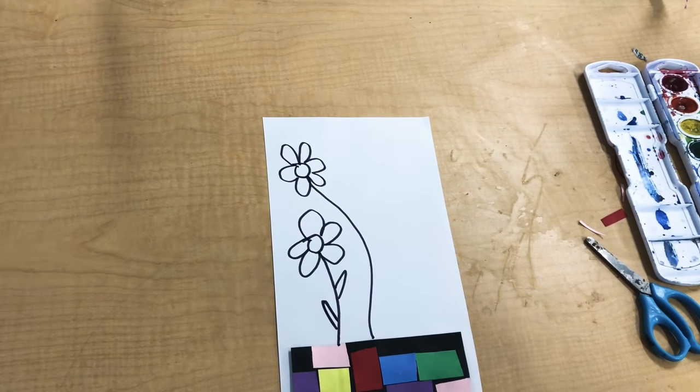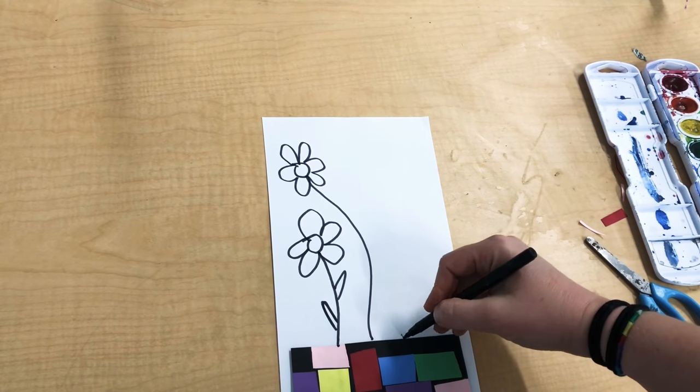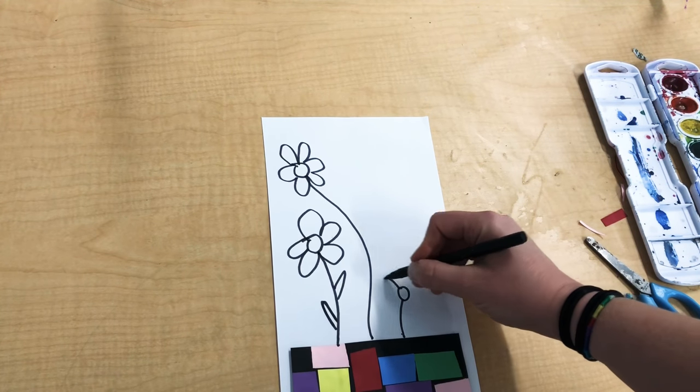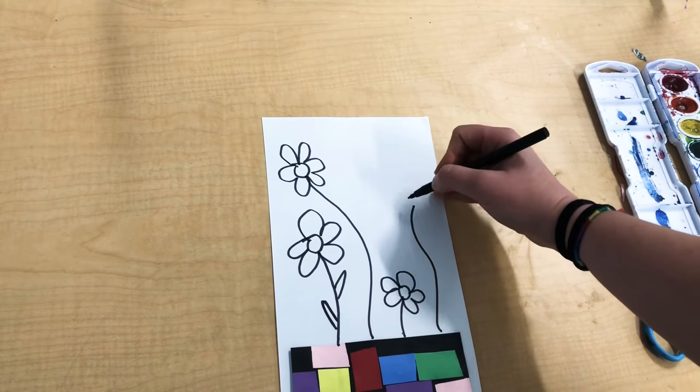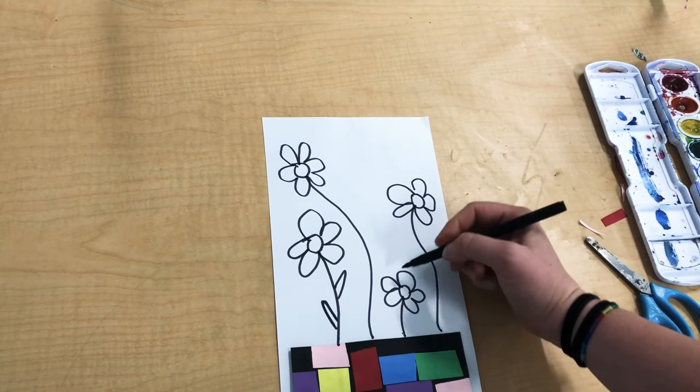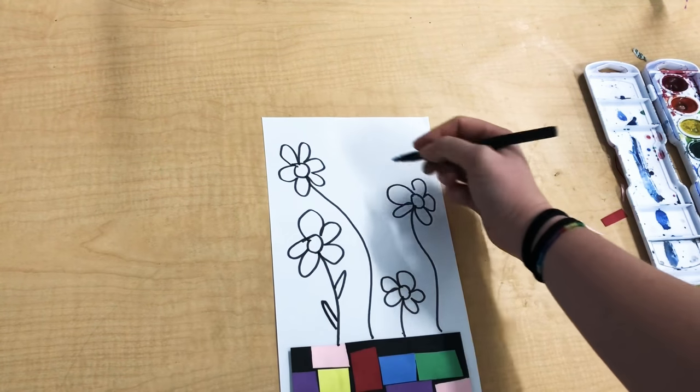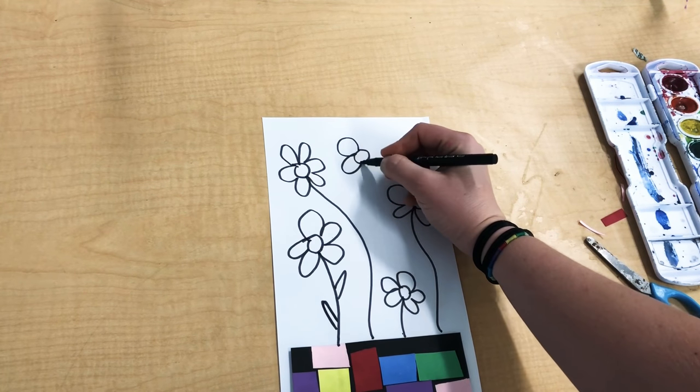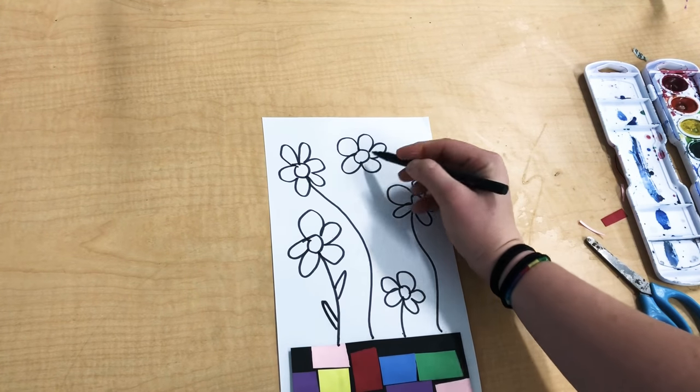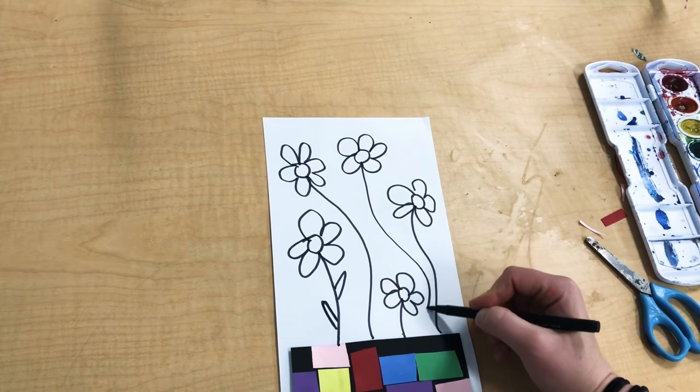Then carefully add some petals. And now I'm just going to keep adding flowers. I'm going to do a short little flower down here. I'm going to do a long one up here. Let's see. I bet I could fit another flower up here at the top. You know what I'm going to do? I'm going to go ahead, draw my flower.